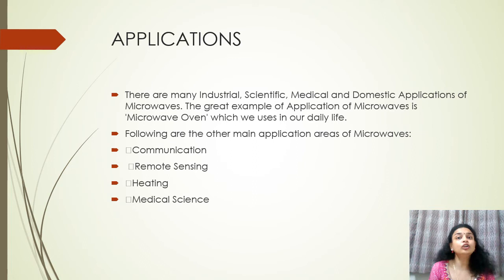What about the type of direct-to-home services which we have? That is part of microwave frequencies. You have seen the dish antennas at your house which are very small in size. That is because they work in Ku band, which is from 12 to 14 gigahertz.